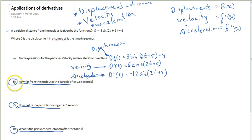If you wanted to answer question B, it'd be a simple matter of substituting 7.5 seconds in for t into your displacement function, because that's what you're trying to find - distance. So 3sin(2 × 7.5 + 5) - 4. You just put that into your calculator and you'd get an answer for that. Let me grab my calculator quickly and check out what that is.